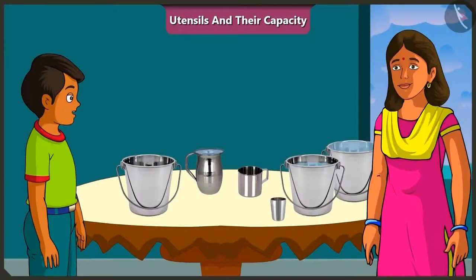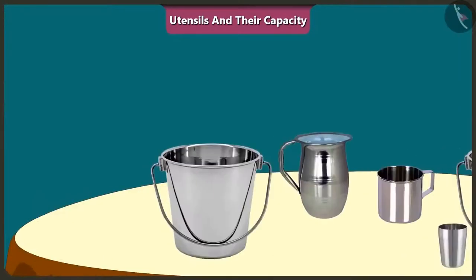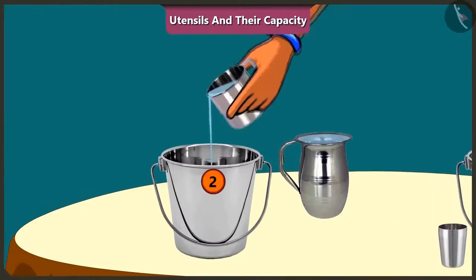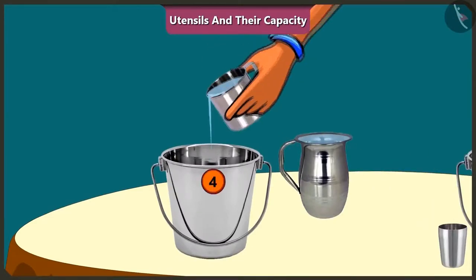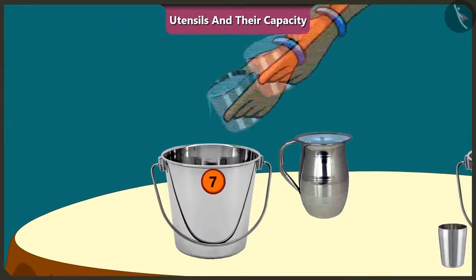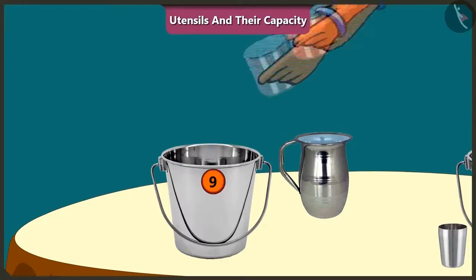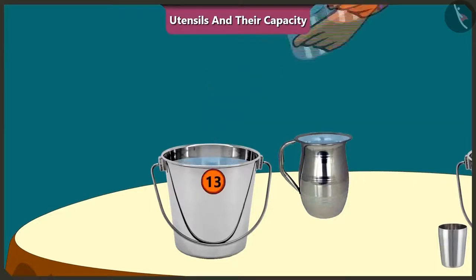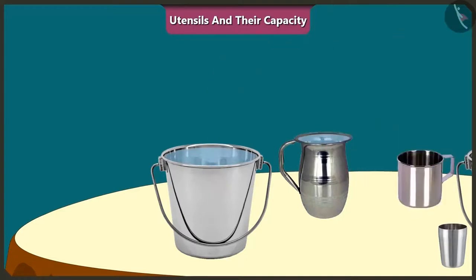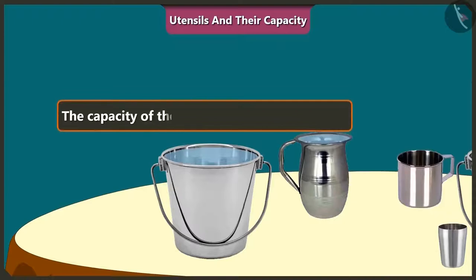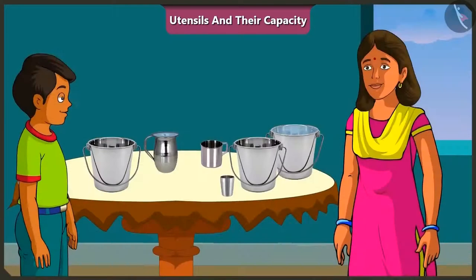Come on, let's fill the bucket using a mug. One, two, three... fifteen mugs of water filled up the whole bucket completely. The capacity of this bucket is equal to 15 mugs of water. Come on, let's try filling this bucket with this jug. One, two, three, four, five. The whole bucket got filled with just five jugs of water. This means the capacity of this bucket is equal to five jugs of water.